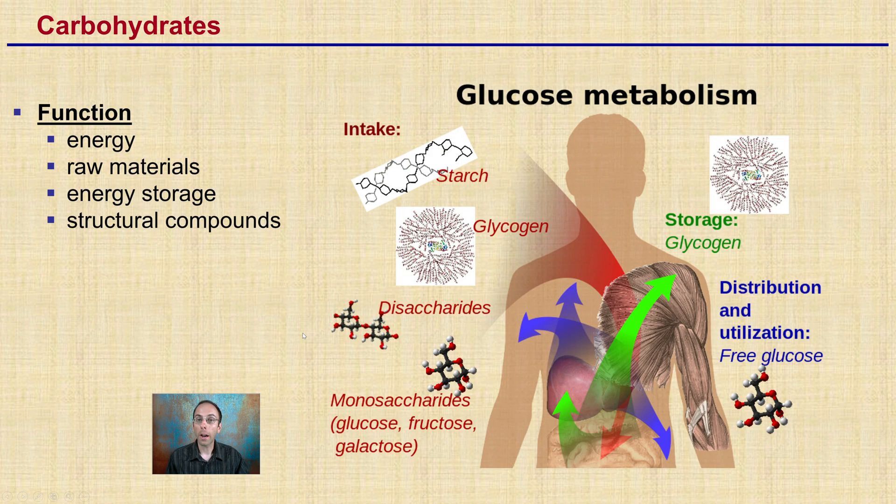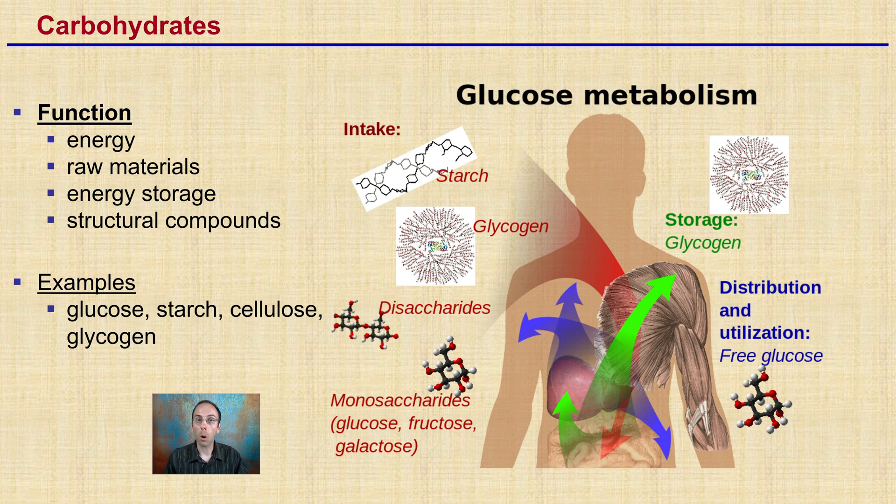Now within these carbohydrates, they function for energy, raw materials, energy storage, structural components. There's a lot of ways that our body can utilize and metabolize carbohydrates. And there's glucose as an example. Remember, that's a monosaccharide, a single sugar. Starches, cellulose, and glycogen are other examples. Keep in mind that starches and cellulose are much more complex. And our digestive system may have a harder time breaking those down because they are so complex.